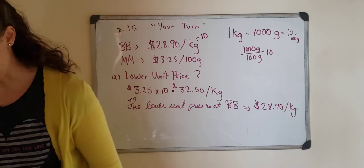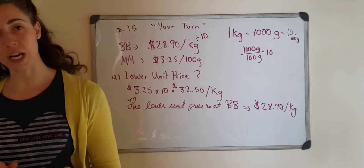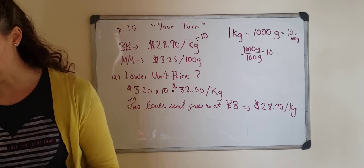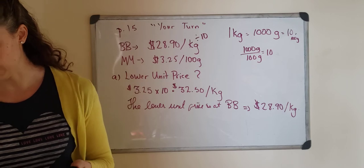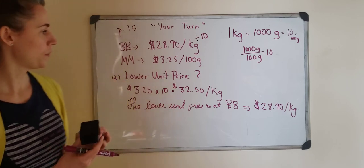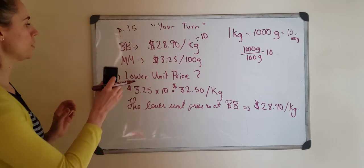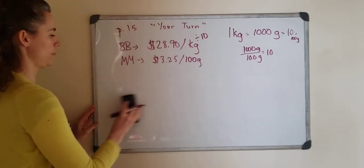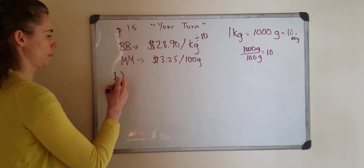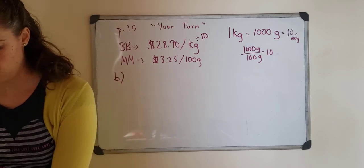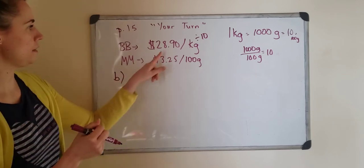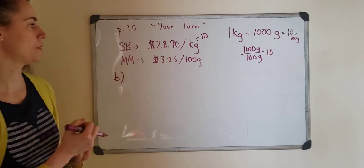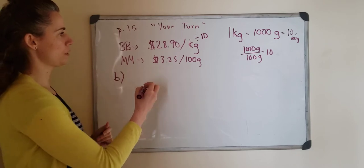If we go on to B it says the Butcher Block changes its price for beef tenderloin to $34 per kilogram. Calculate the increase in price. So it was $28.90 and it increases up to $34.